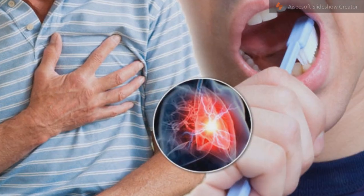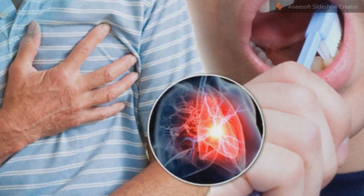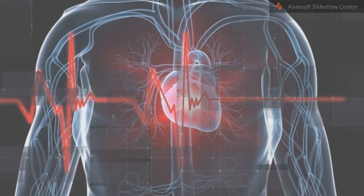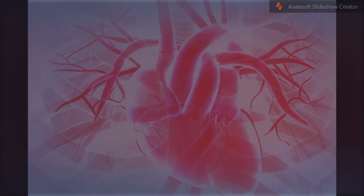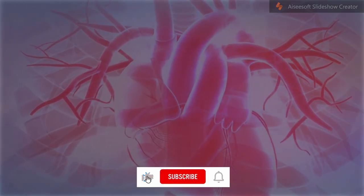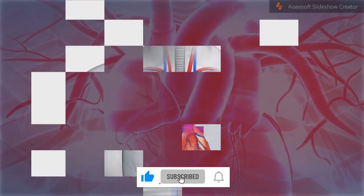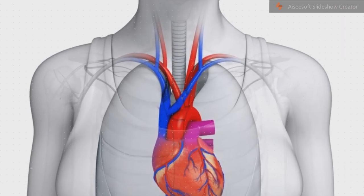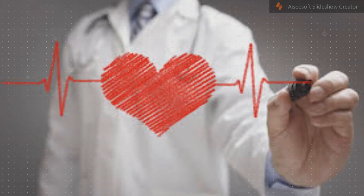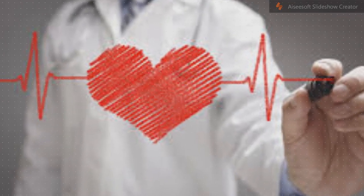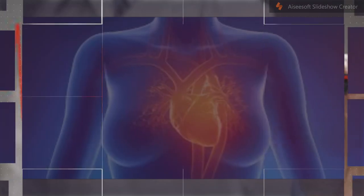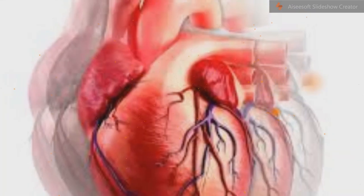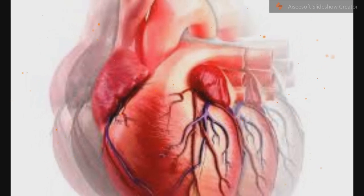Atherosclerosis: The most common cause of a myocardial infarction is the rupture of an atherosclerotic plaque on an artery supplying heart muscle. Plaques can become unstable, rupture, and additionally promote the formation of a blood clot that blocks the artery. This can occur in minutes, and blockage of an artery can lead to tissue death of tissue being supplied by that artery.